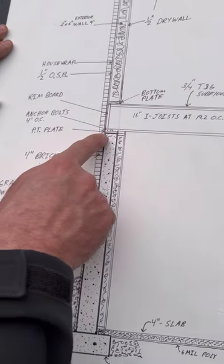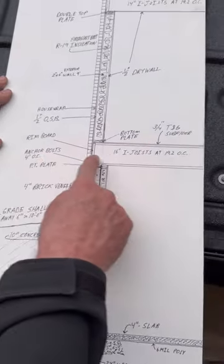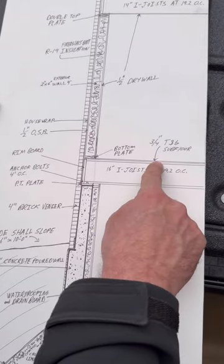Four inch brick veneer. Anchor bolts four foot on center. 16 inch eye joist with three quarter inch tongue and groove subfloor.